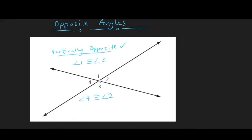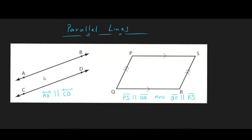Opposite angles are also congruent and measure the same. In this example, angles 1 and 3 are congruent or the same, and then angles 4 and 2 are vertically opposite.